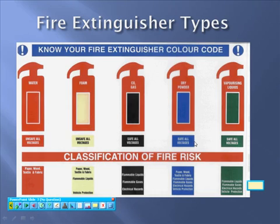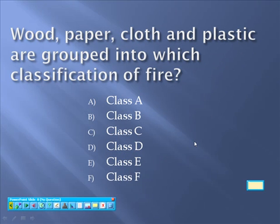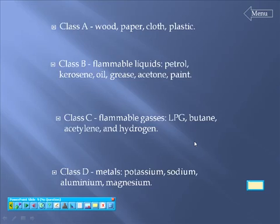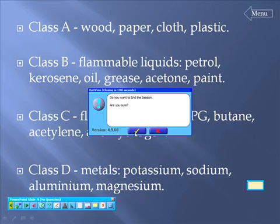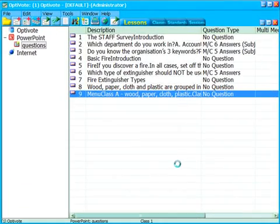I now need to work through the rest of my PowerPoint presentation until I get to the next question or the end of the PowerPoint. Once I'm at the end of the PowerPoint I can close my presentation. This will return me to the main screen and from here I can now go and take a look at the reports.